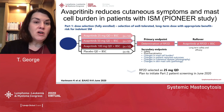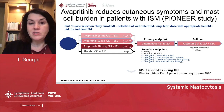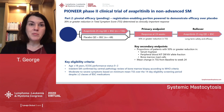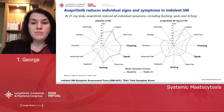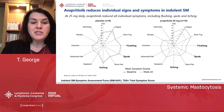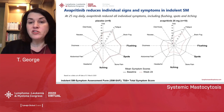Now looking at avapritinib in the PIONEER study in patients with indolent disease — part one was dose selection, where 25 milligrams per day was ultimately selected; part two was the pivotal double-blind placebo-controlled randomized clinical trial. We found that avapritinib reduces signs and symptoms in indolent SM using the indolent SM symptom assessment form. Patients on placebo showed minimal change, while patients on avapritinib showed a marked decrease in total symptom score as well as all individual symptoms.